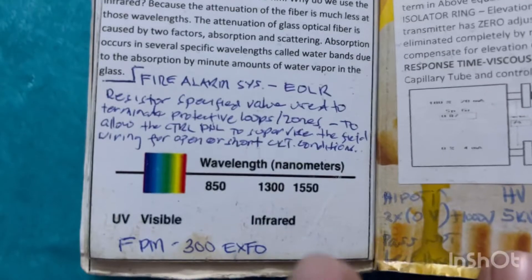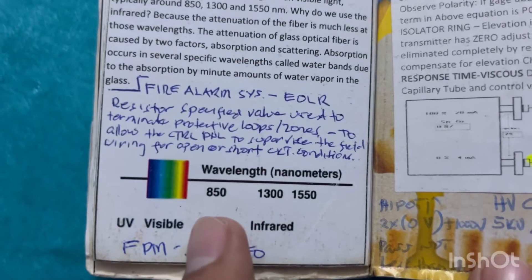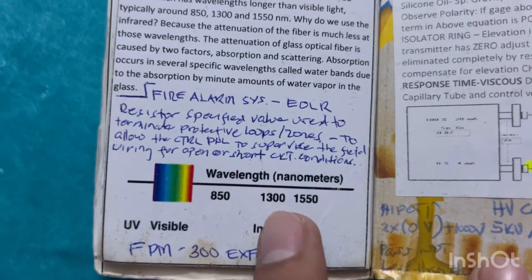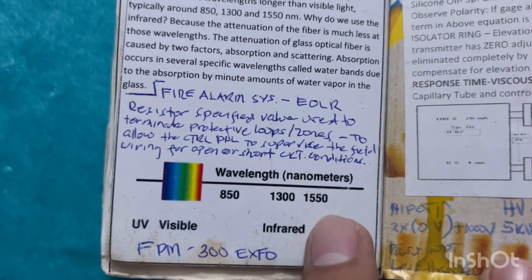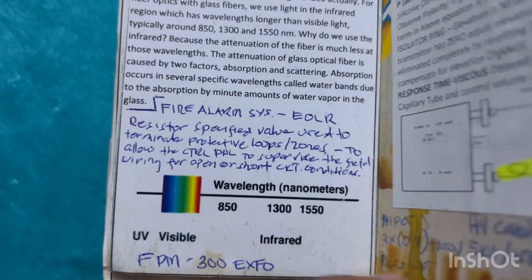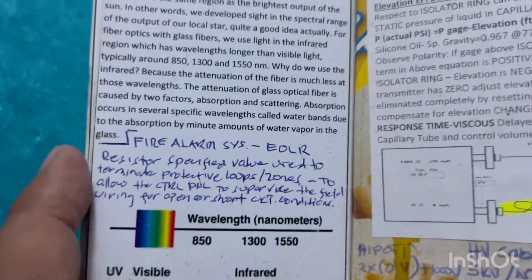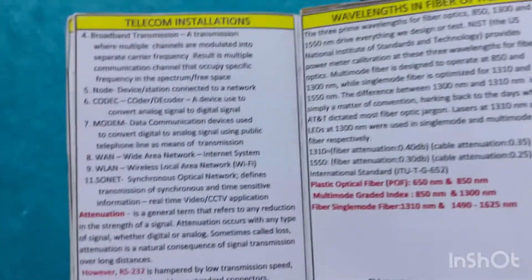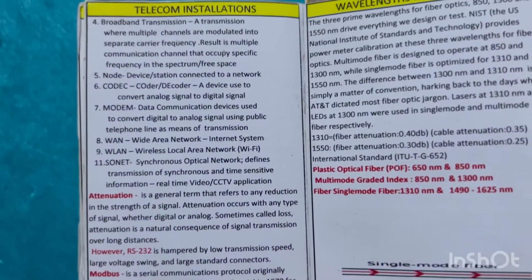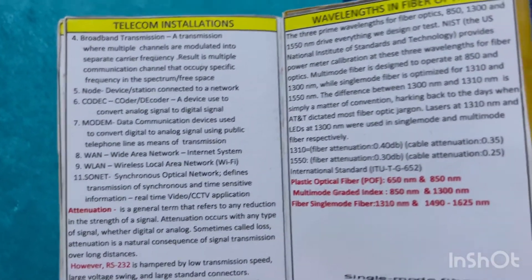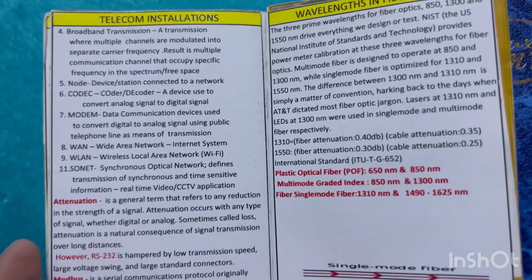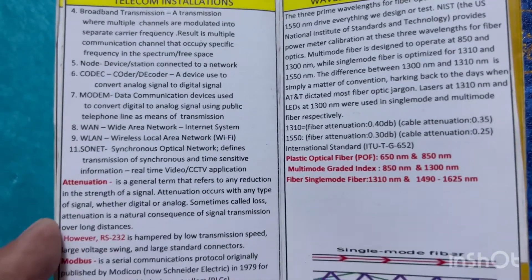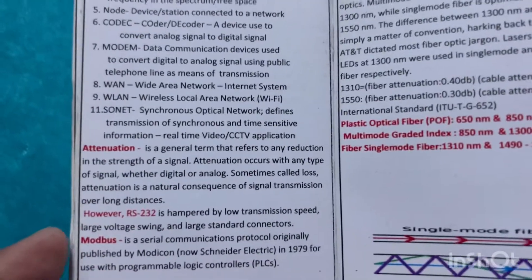Wavelengths: 850, 1300, 1550 — this is the testing. If you do the OTDR test or power meter test, you have an idea how to do the testing.